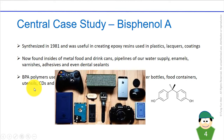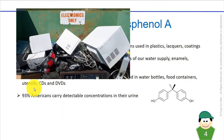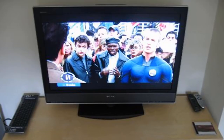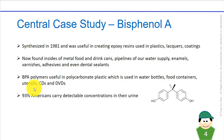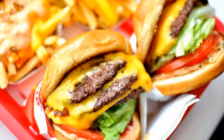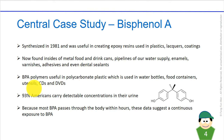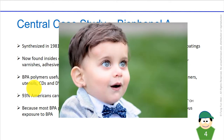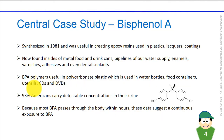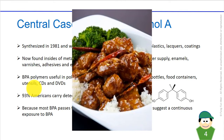With so many uses, BPA has become one of the most produced chemicals. The problem is that BPA leaches out from its products and enters our food, water, and bodies. Fully 93% of Americans carry detectable concentrations of BPA in their urine. Because BPA passes through the body within hours, this data suggests we are receiving almost continuous exposure. Babies and children have relatively higher exposure to BPA because they eat more for their body weight and metabolize the chemical less effectively.